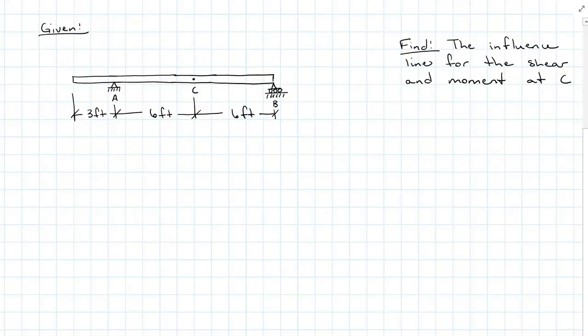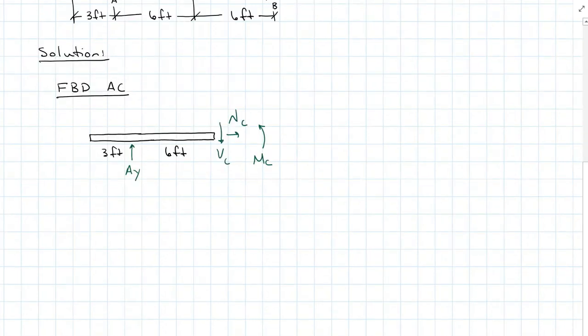Let's say we have a system that's pinned at A and we have a roller at B, and we want to find the influence line for the internal shear and moment at point C. Starting with a free body diagram where I've sectioned at C, I see I have four unknowns and this is not determinant.